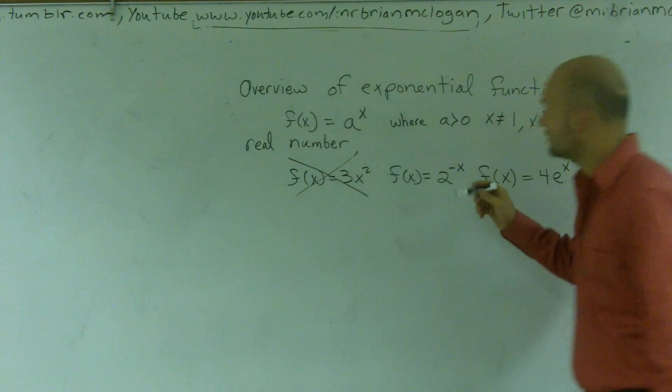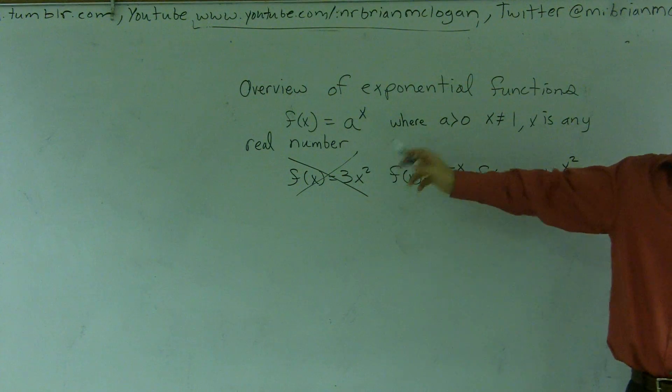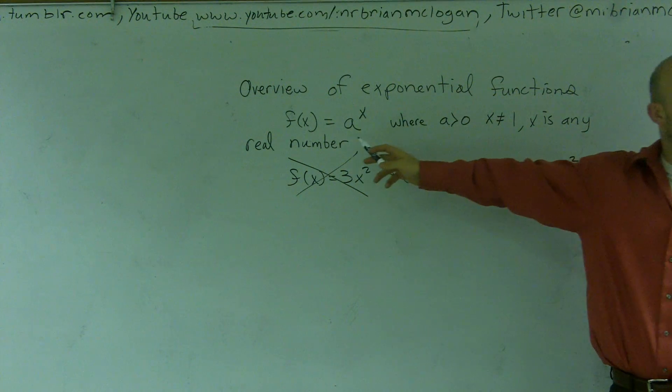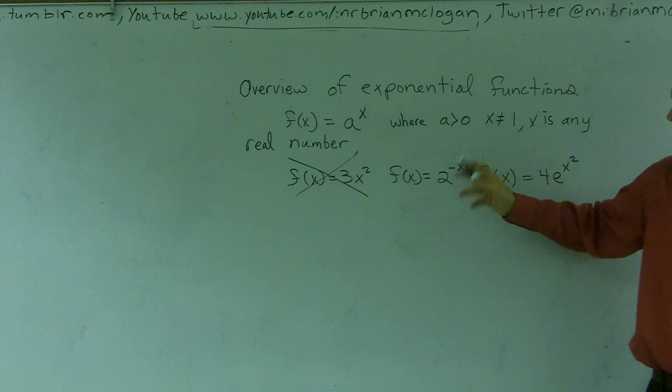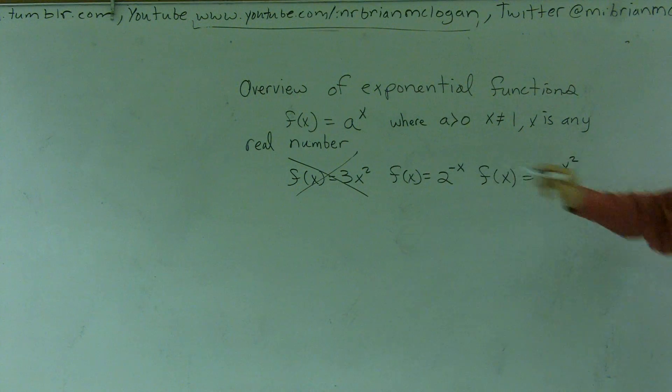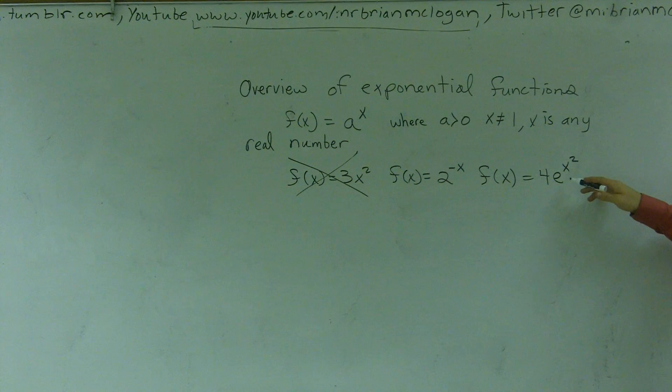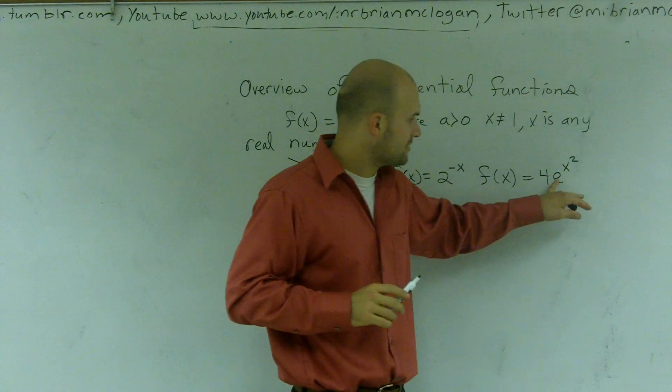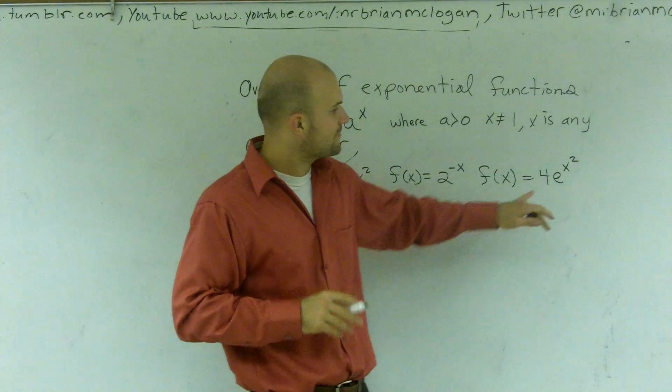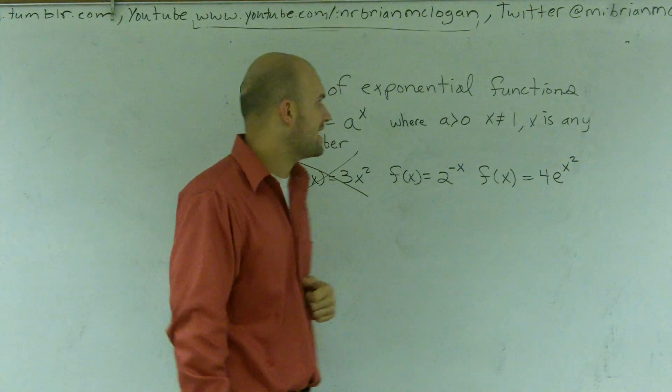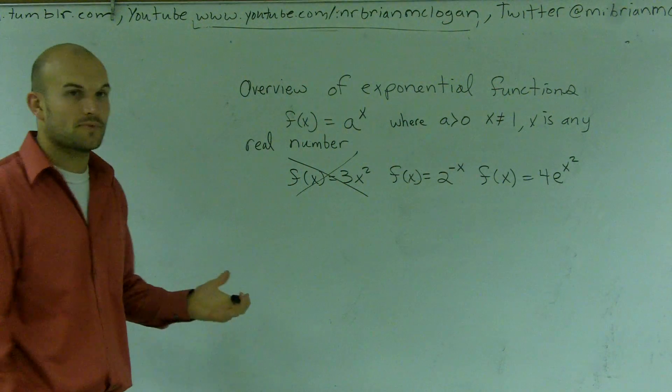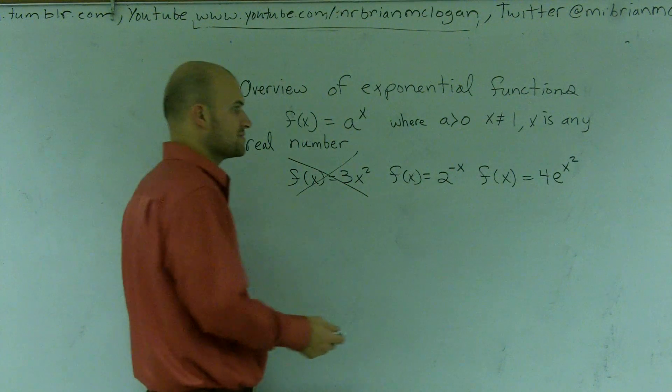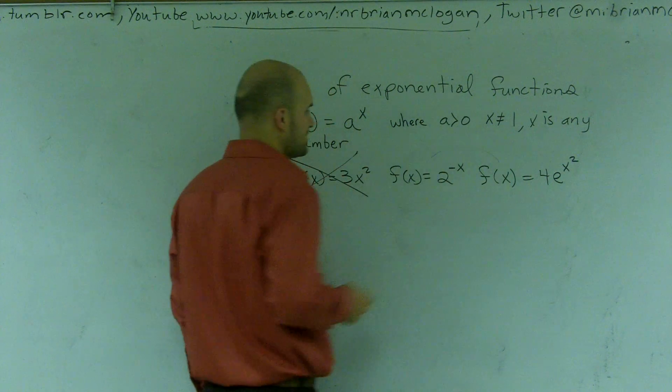Over here, all it says is x is any real number. So since I have my x as my exponent, my variable as my exponent, this is exponential. And then over here, it says a has to be greater than 0. Well, e is my constant, which we'll be talking about. So e is actually not a variable in this problem, e is actually going to be a constant. And since, again, my variable as my exponent, this is also going to be exponential as well.